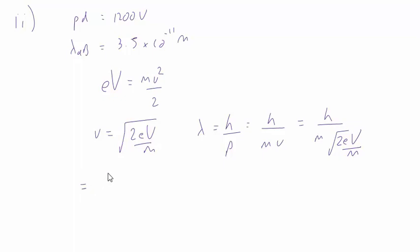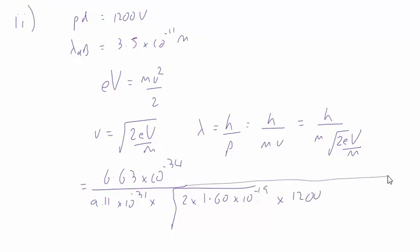If we then put in the values, that is 6.63 times 10 to the minus 34 over 9.11 times 10 to the minus 31 for the mass of the electron, times the square root of 2 times the electron charge times voltage over the mass. This all comes out at 3.54 times 10 to the minus 11 meters, as required.